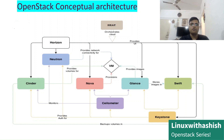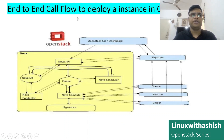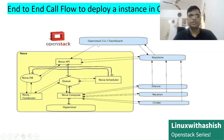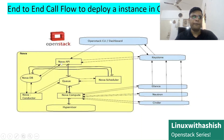To explain this in more detail, here is a low-level end-to-end flow to deploy an instance in OpenStack cloud. First, the OpenStack CLI or dashboard — Horizon — provides the graphical user interface for the user to access the cloud. Keystone again authenticates and authorizes that user, checks which project they are working on and what role is assigned to them. Once the database confirms the user, the request goes to the Nova API.